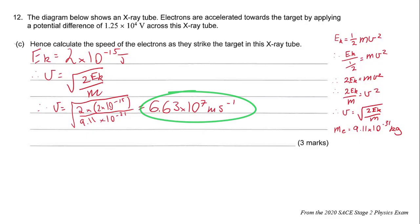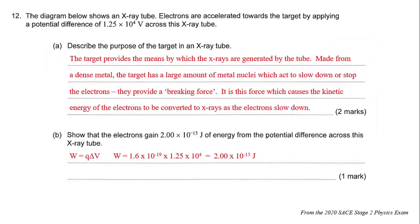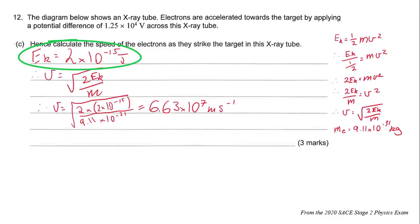One of the key things to notice about this question here is that even if you couldn't answer B, you could still use the information from B to go forward and answer C. The idea when you write a good exam question is that if you can't do the previous calculation, you can still go ahead and do the next part of the question so you're not penalized.